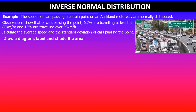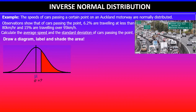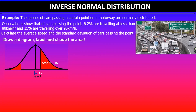We'll start by drawing a diagram, labeling it, and shading the area that's required. In this case we do not know the mean value and we also don't know the standard deviation — those two are unknown. We are given that 15% of cars are traveling over 95 kilometers per hour, shaded on the right-hand side, and 6.2% are traveling below 80 kilometers per hour, so that shaded area is below 80, representing an area of 0.062.